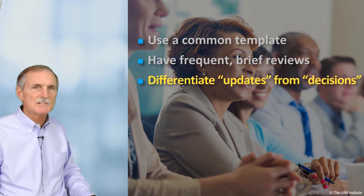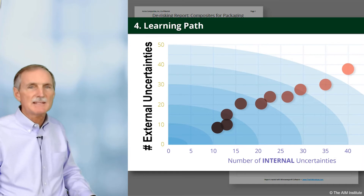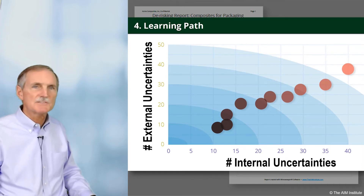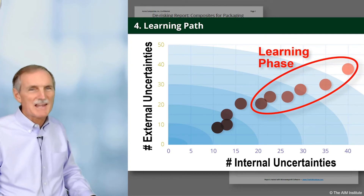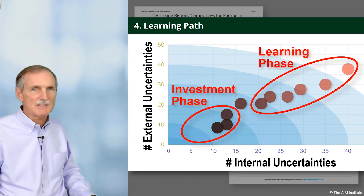Differentiate project updates from decisions. This chart shows the number of critical external and internal assumptions. At first, your project is in the learning phase and you don't need or want management decisions. That comes later in the investment phase.